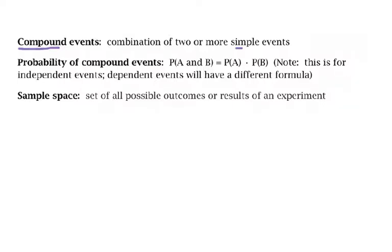To find the probability of compound events, the formula is: the probability of A and B equals the probability of A times the probability of B. This is only for independent events. We'll talk about dependent events later, and there will be a different formula for those. An example of a dependent event is: if you take a gumball out of a machine and eat it, what's the probability of getting the same color gumball next time?